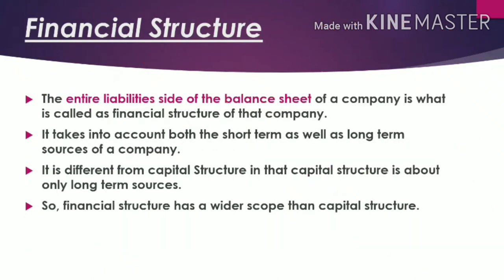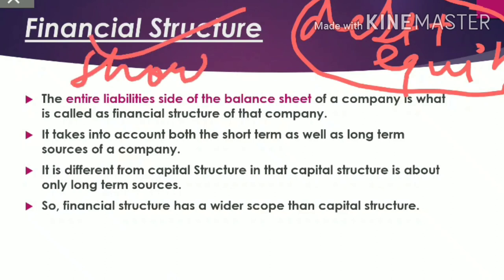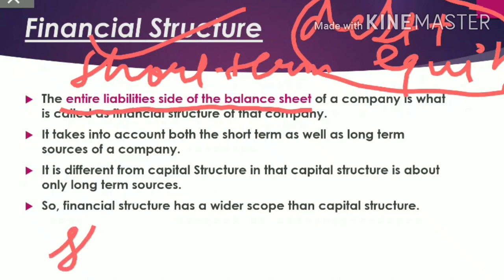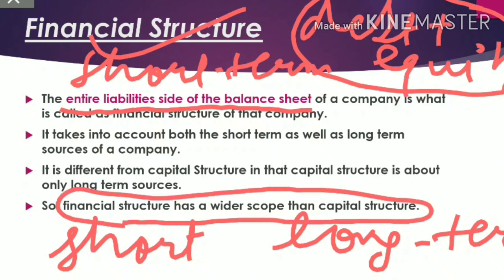The last term is financial structure. Capital structure is a combination of debt plus equity — the long-term sources of funds. But in financial structure, short-term sources are included along with long-term sources. Financial structure is therefore a wider term as compared to capital structure. Capital structure includes only long-term sources — debt and equity.